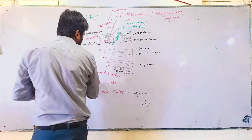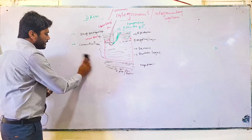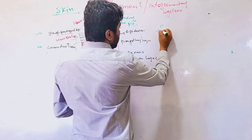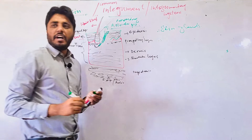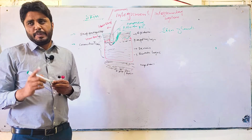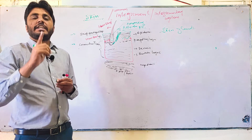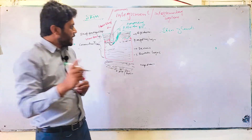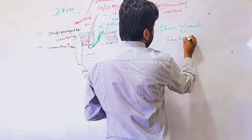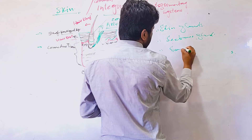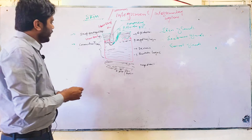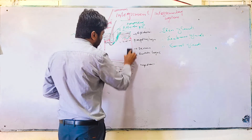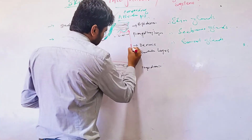The second important appendage of the skin is the skin gland. The derivatives of skin — the appendages — include skin glands. The skin has two glands: number one is the sebaceous gland, and number two is the sweat gland. We will use this diagram to understand the glands more. They are glandular epithelium modifications — a modification of the epidermis.